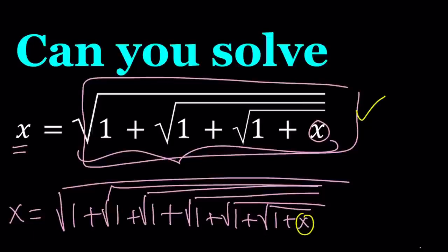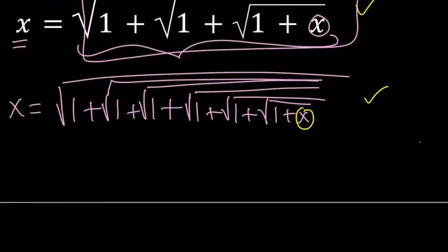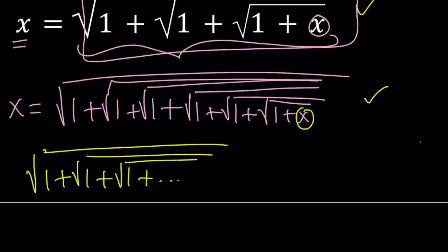And then you're just basically going to keep getting something like this. The square root of 1 plus the square root of 1 plus the square root of 1, dot dot dot. And of course you're going to have an x at the end. Equals x.